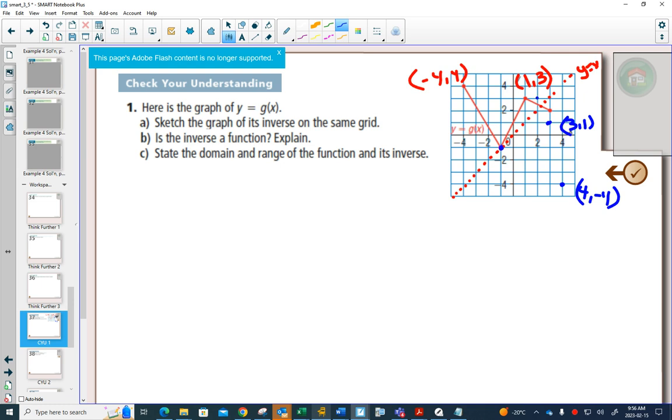So we do that to all 4 points. And now we have to connect our dots. The other thing I want you to notice is wherever the graph intersected the line y equals x, those points are going to be the same.